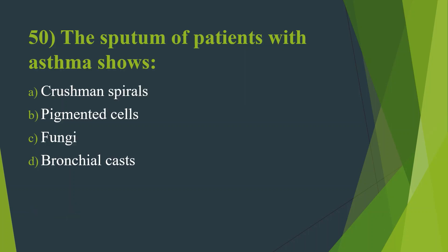Fiftieth question: The sputum of patients with asthma shows — Option A, Curschmann spirals. Option B, Pigmented cells. Option C, Fungi. Option D, Bronchial cast. Answer is Option A, Curschmann spirals.